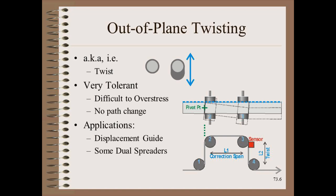Far less risky is out-of-plane twisting, which occurs when rollers are skewed or scissored. Web handlers know that the web is about a hundred times as tolerant in twisting as it is in bending. They make use of this in applications such as a displacement guide, where the intent is to change the path of the web a lot, but to do so without overstressing the web or risking wrinkles.